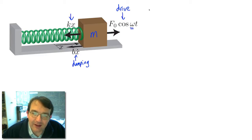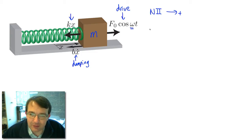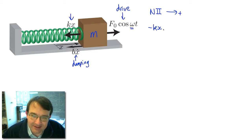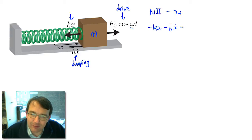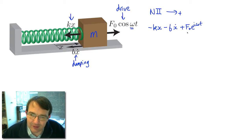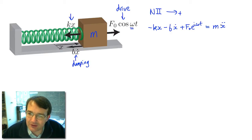We solve this using Newton's second law, taking the positive direction and summing all forces equal to mass times acceleration. We get minus kx (spring force, negative direction), minus bẋ (damping force, negative direction), plus f₀ times the real part of e^(iωt) (drive force, positive direction), equal to mẍ.